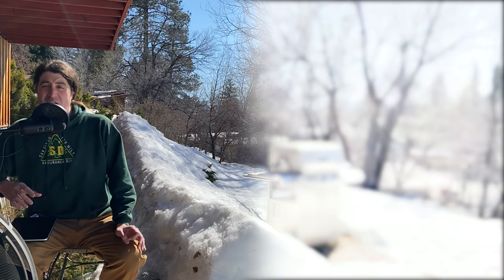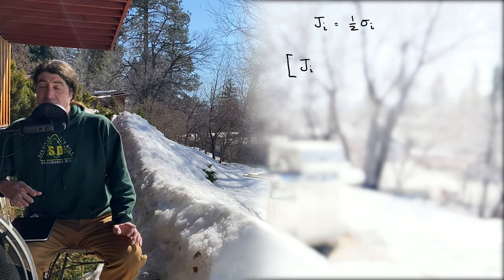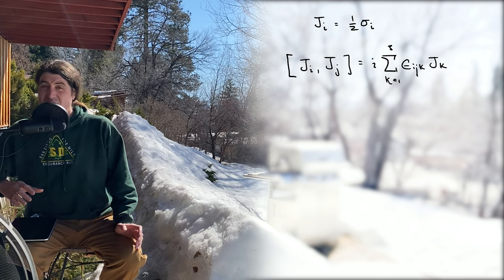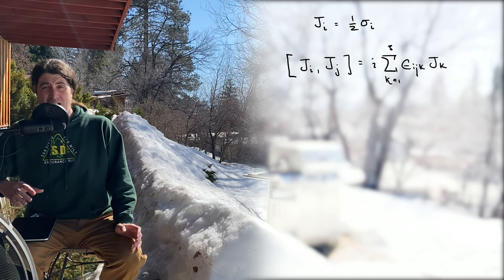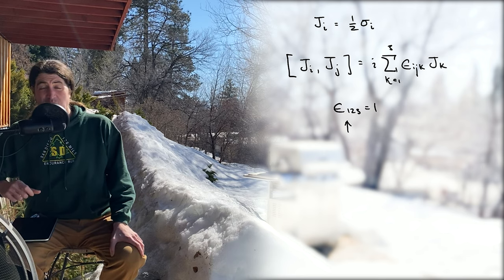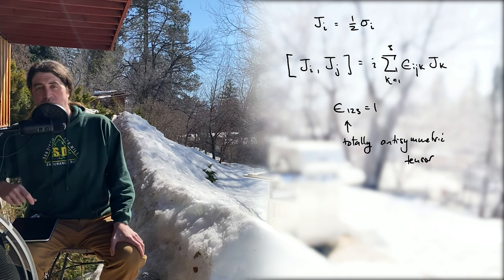Let's define the operators J sub i equal to sigma i over 2, and the commutation relations satisfied by the Lie algebra of SU(2) are simply j_i with j_j is equal to i times epsilon_ijk j_k. Here epsilon of course is the totally anti-symmetric object with three indices, and i of course is the square root of minus 1.